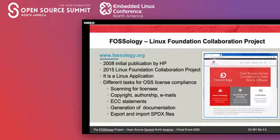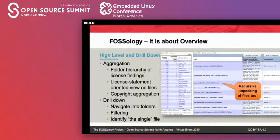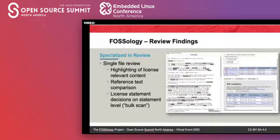So what's special about FOSSology? After all the years working on licensing and open source software, the users and community of FOSSology found that overview is actually key for efficient working on open source packages. Overview means being able to navigate the package's file hierarchy, look into folders, and at the same time aggregate found licensing information, so you can quickly identify individual files. Aggregation is super important for finding critical licensing statements quickly.